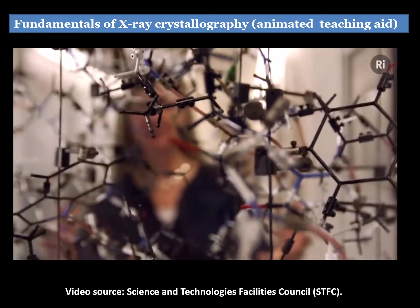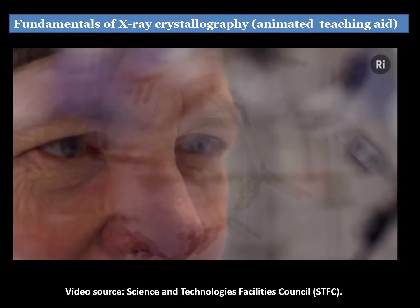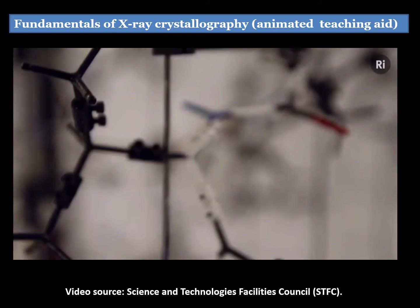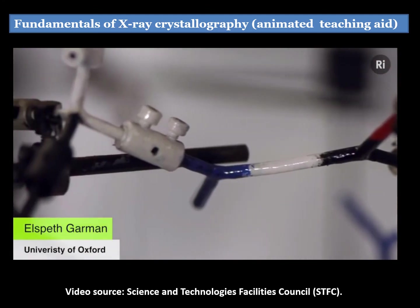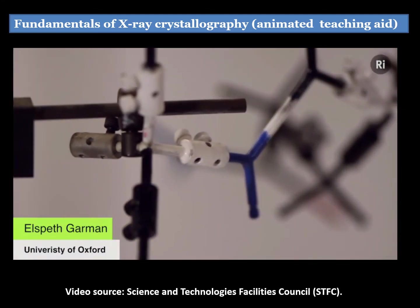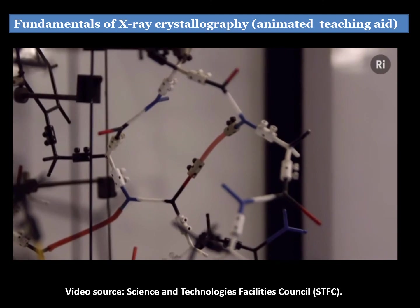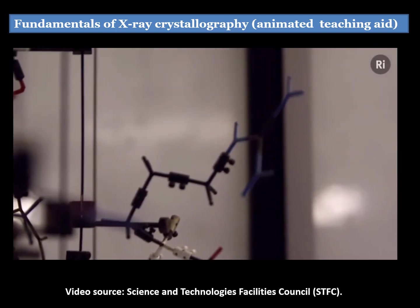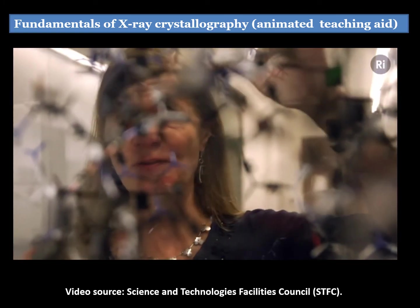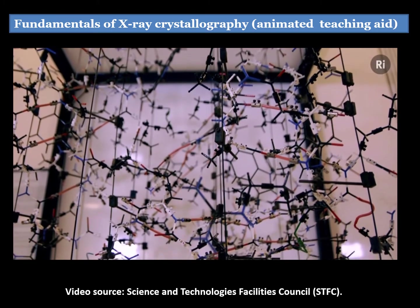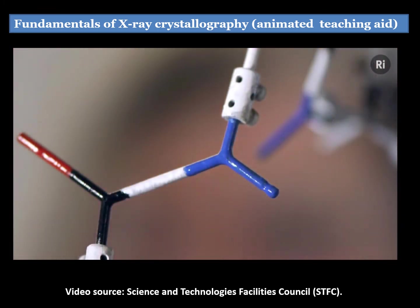This is a three-dimensional structure of a protein called lysozyme — it represents the order of nature. It's an enzyme that's in our tears, saliva, and mucus, and it helps us fight bacteria. Knowing this three-dimensional structure helps us understand the mechanism of action of this enzyme. Unfortunately, the size of the molecule is such that it's far too small for us to see under a light microscope or with our naked eye, because the wavelength of light is much larger than the size of this tiny molecule.